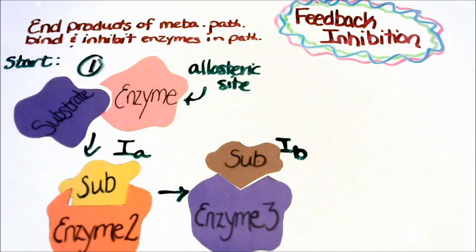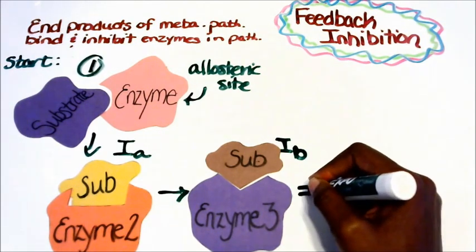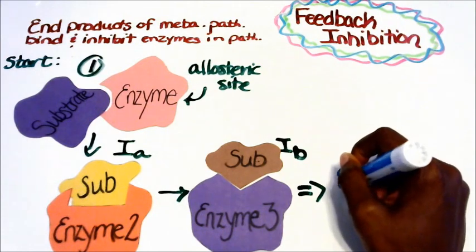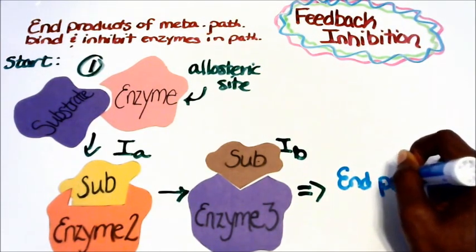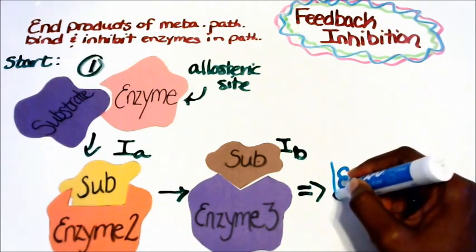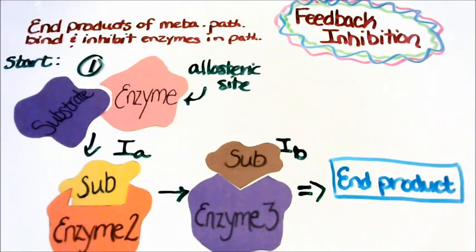So with intermediate B, I have enzyme number three and they bind. So at the end of the process there is an end product. Now what happens if there's too much of the end product?